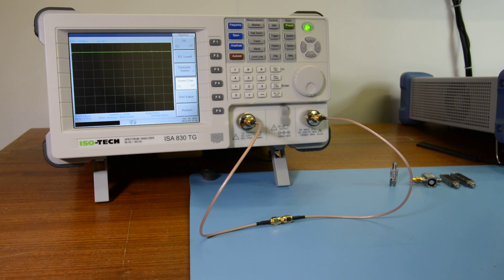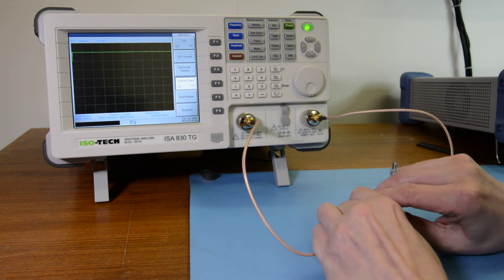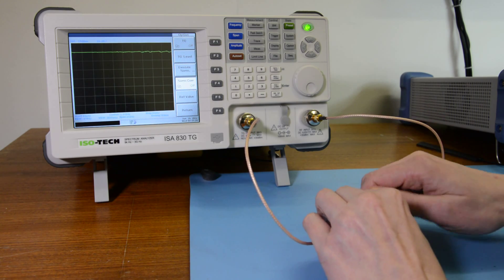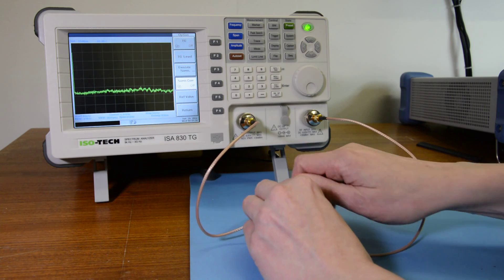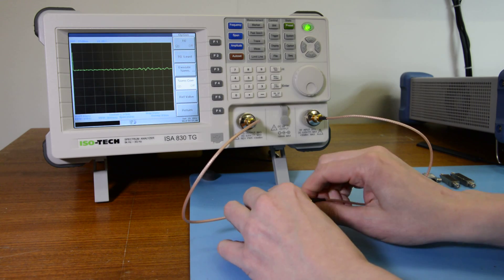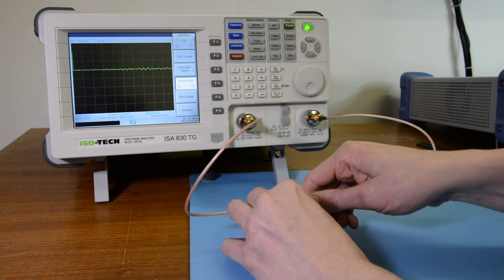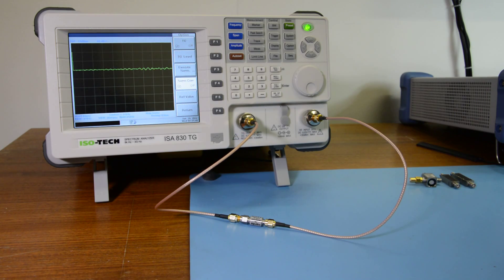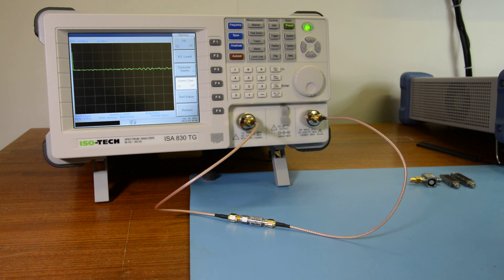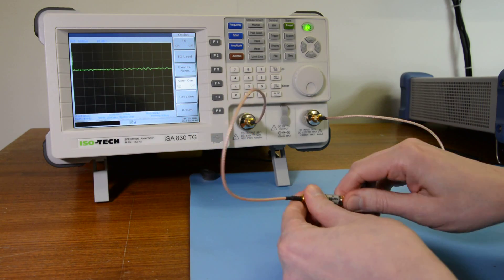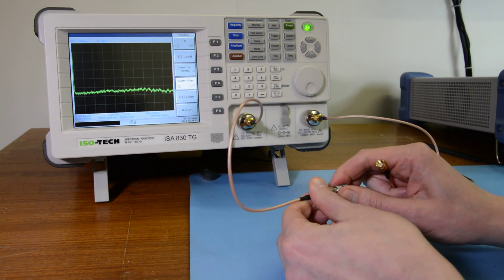Now the first component that we're going to look at is a simple 20 dB attenuator or pad. So we disconnect one end of this cable and leave this join in place and then set the attenuator. We can see that there's been a reduction in two squares which is 20 dB. It's 10 dB per division. So that's just as we would expect. Take the 20 dB attenuator out of line.